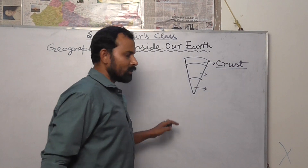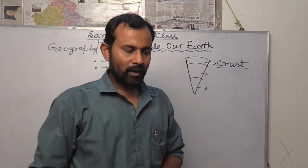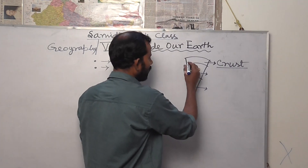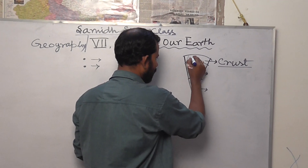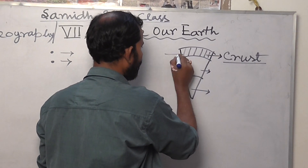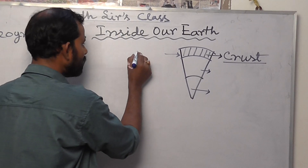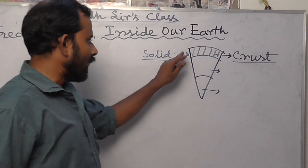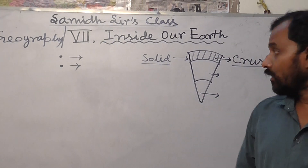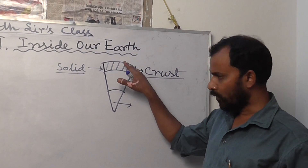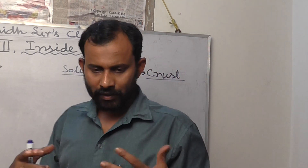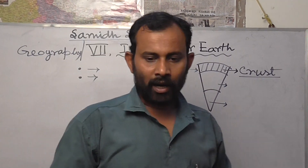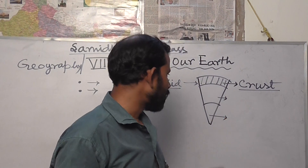What are the characteristics of the crust? The crust is also known as the lithosphere — it is the layer where we are living. It is made of solid materials, including a cover of rock and a cover of soil. We will come to know more about rocks later. The next layer is known as the mantle.